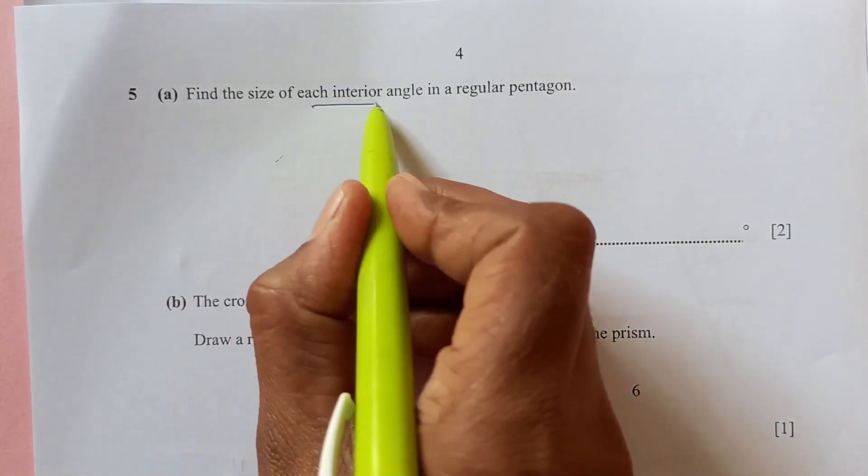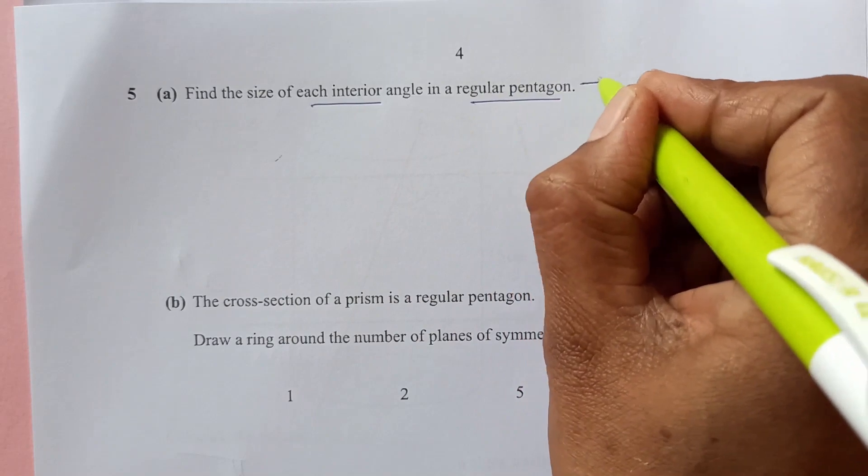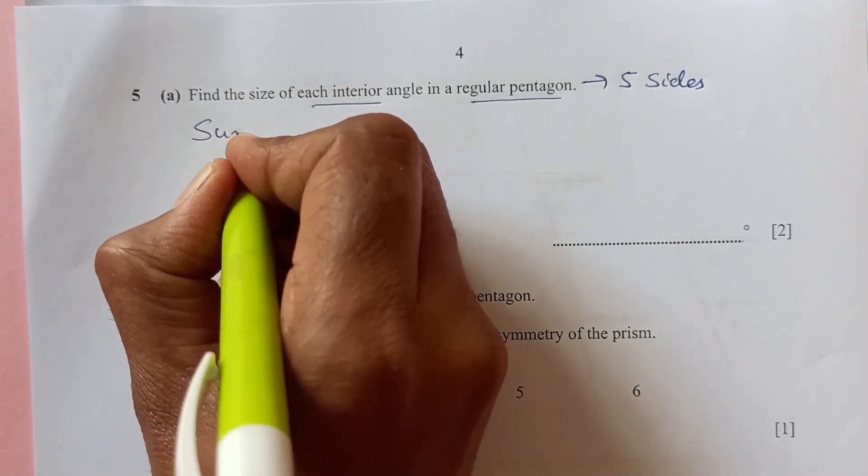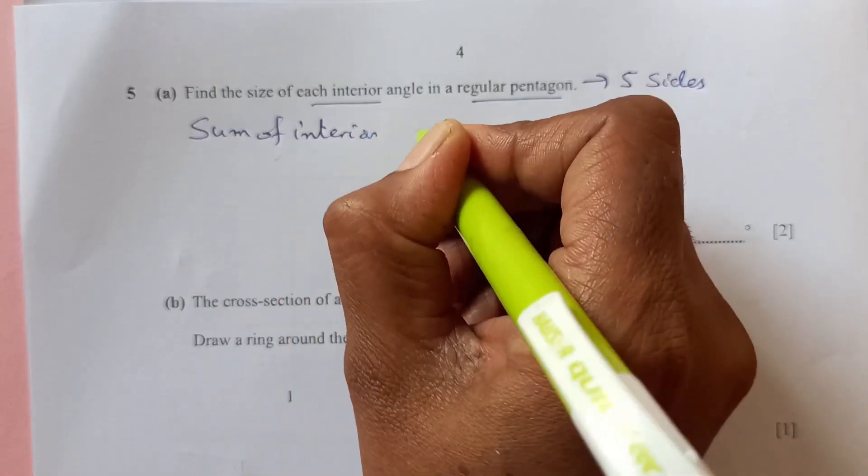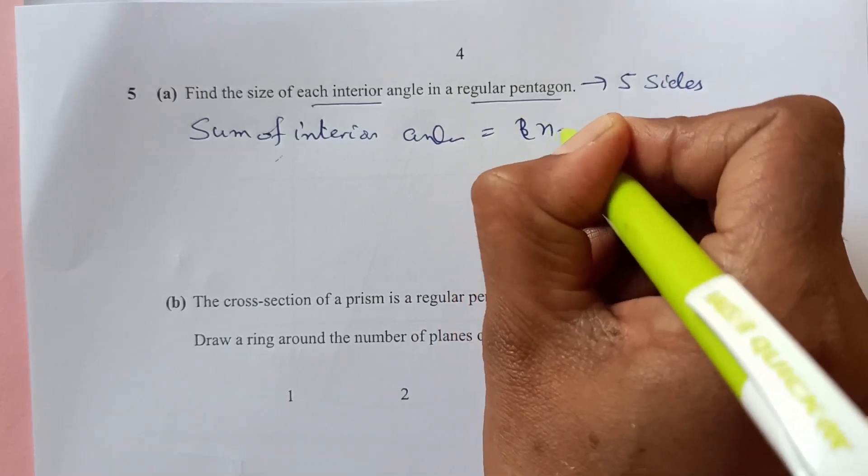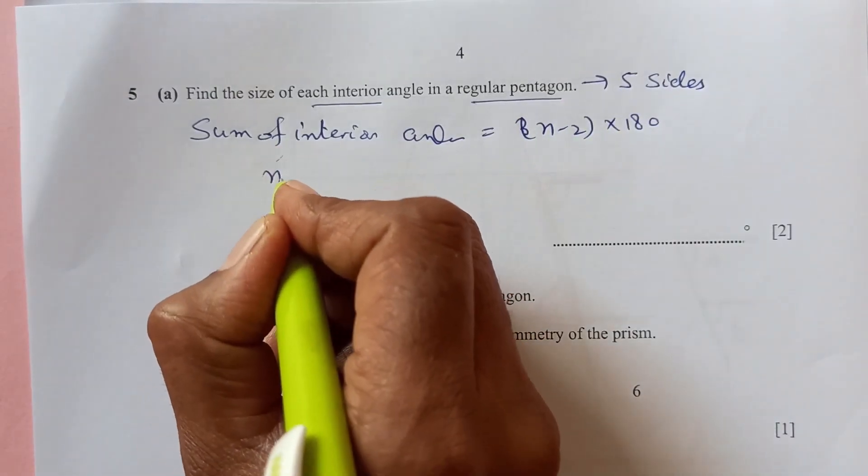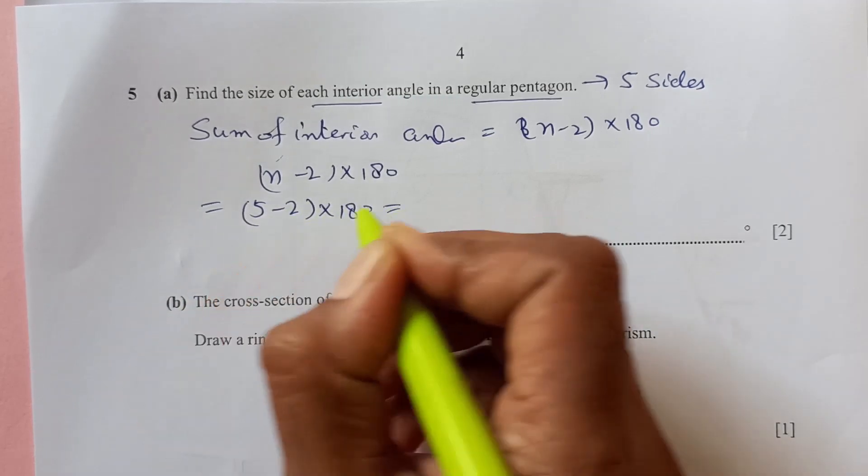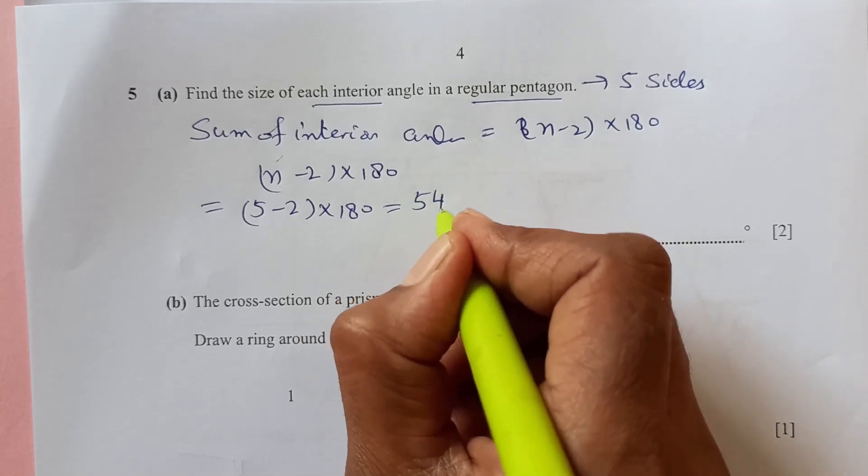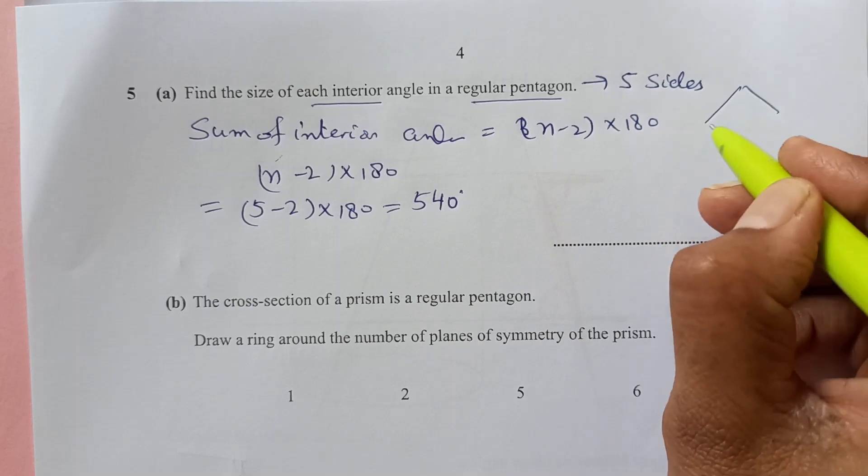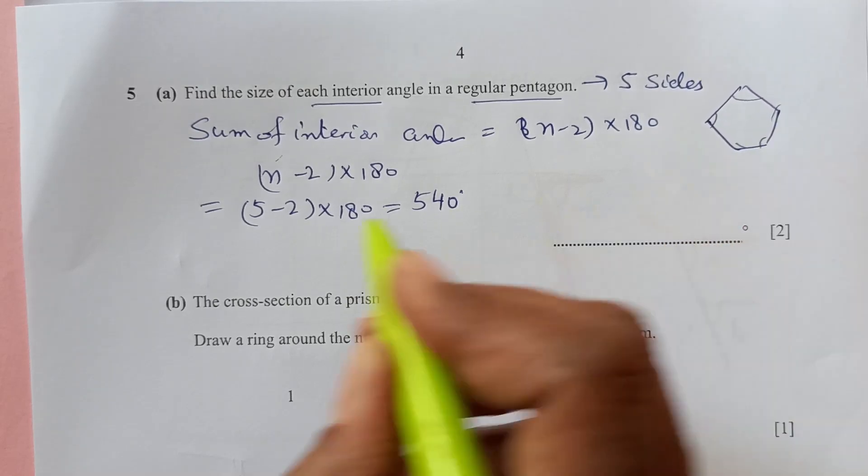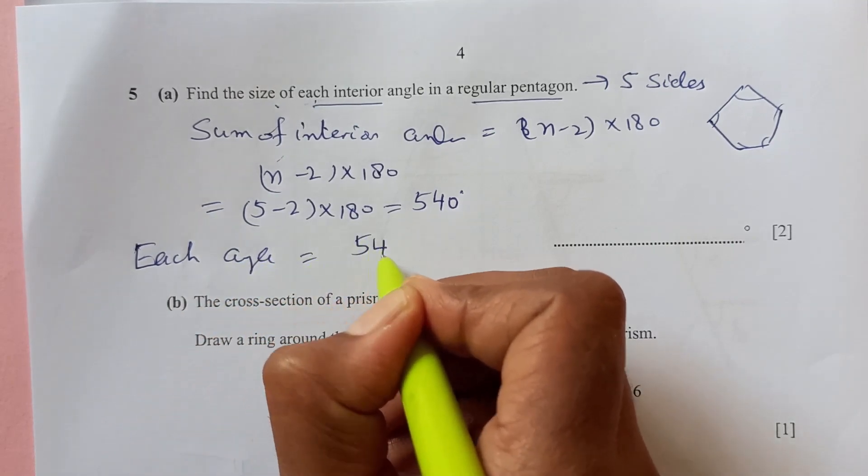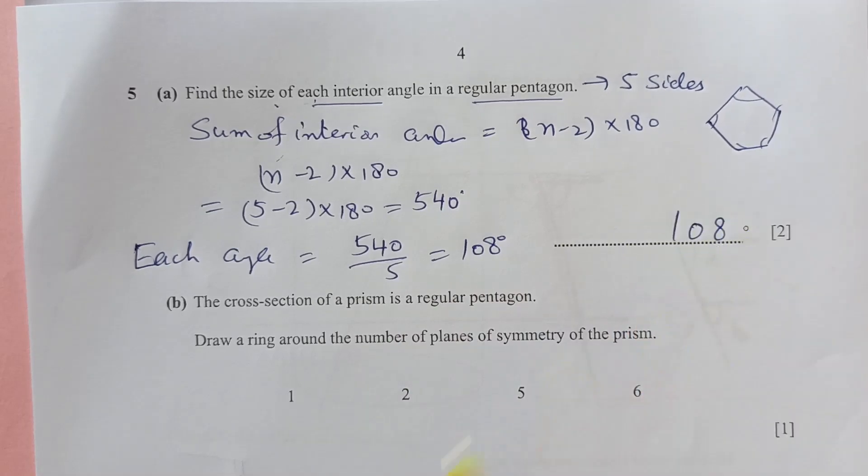Question 5. Find the size of each interior angle in a regular pentagon. Pentagon having five sides. A shape having five sides. Interior angle, sum of the interior angles is n-2 times 180. So, n is 5. 5-2 that is 3 times 180. That is 540. So, that is the sum of all the angles of a pentagon. We are asked size of each angle. So, each angle is going to be 540 divided by 5. That is 108 degrees.